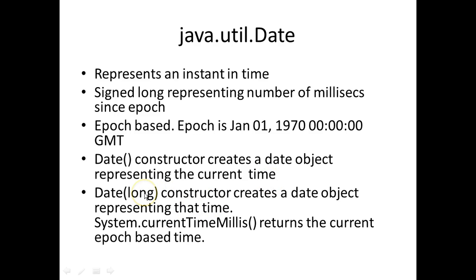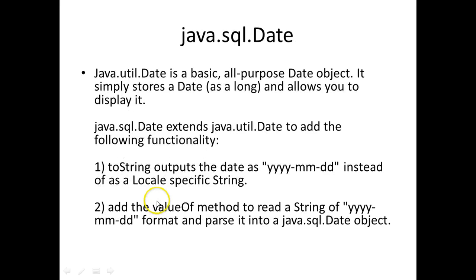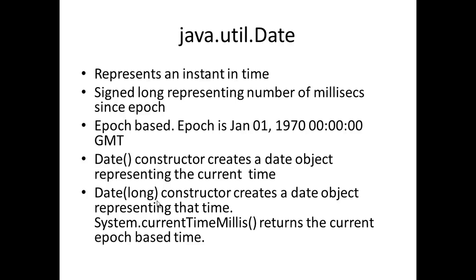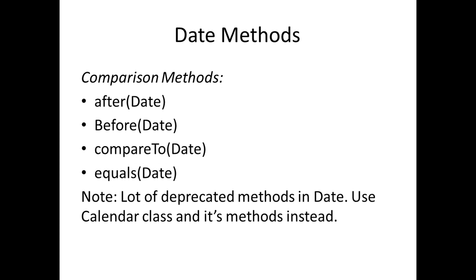When you pass a long to the Date constructor, it creates a Date object representing that time — that long is the number of milliseconds since the epoch. If you want to get the current epoch-based time, you call System.currentTimeMillis(), which gives you a long representing the number of milliseconds since the epoch.